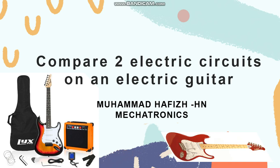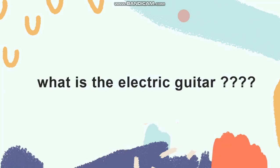What I want to explain are two different electric guitar circuits. First, let me explain what an electric guitar is. An electric guitar is a type of guitar that uses several pickups to convert the sound or vibration of the guitar strings into an electric current.